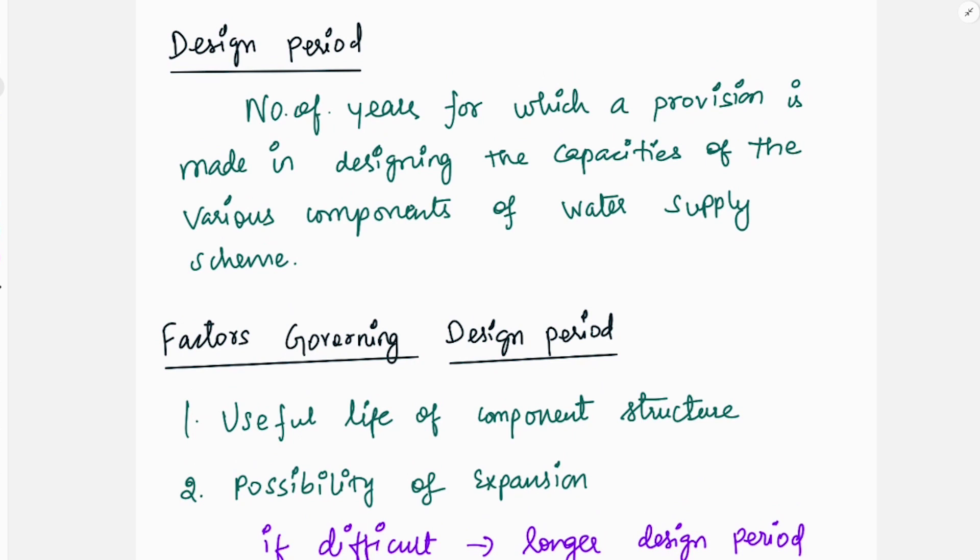Different kinds of structures we will talk about the design period. The design period is the number of years for which provision is made in designing the capacities of various components of the water supply scheme. In our water supply scheme, we will talk about different types of components.